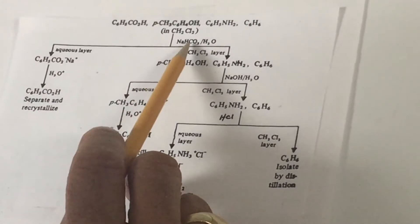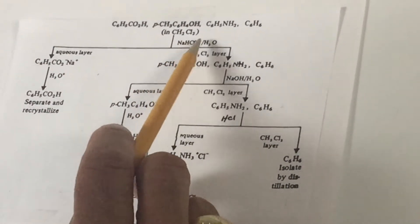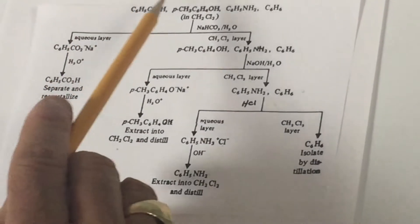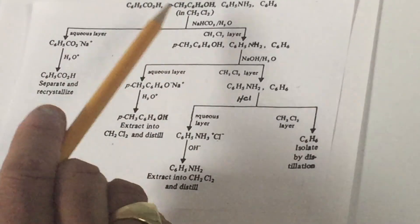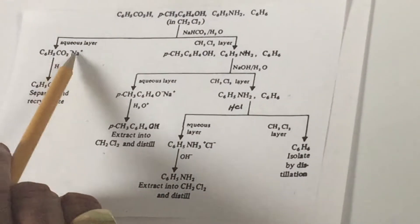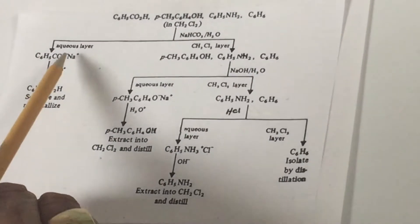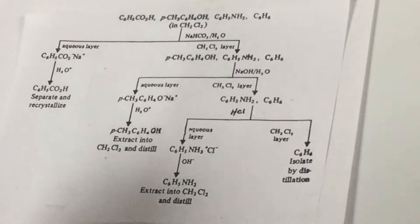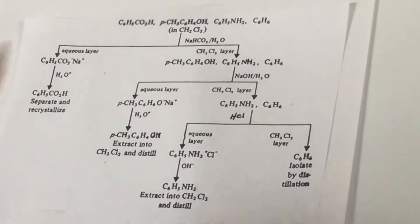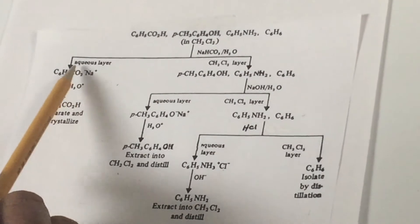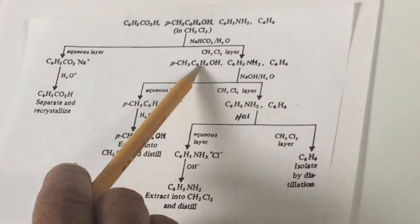What I'm going to do is first treat the mixture with aqueous sodium bicarbonate. That's going to cause me to have two layers. It's going to react with the acid — sodium bicarbonate takes out the acid and makes what we call the carboxylate salt. This would be called sodium benzoate. So in your separatory funnel, which is the device used when you do an extraction, we're going to have two layers: an aqueous layer with the sodium benzoate, and the organic layer with the three remaining compounds.